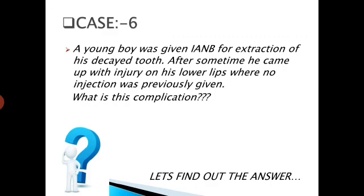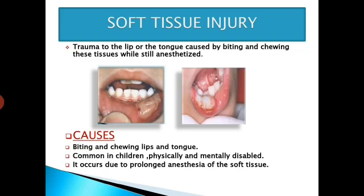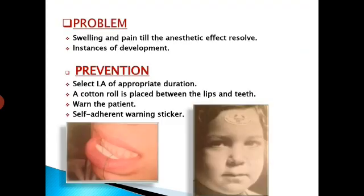Case No. 6. A young boy was given an inferior alveolar nerve block for extraction of a decayed tooth. After some time he presented with injury on his lower lip where no injection was previously given. What is this complication? The answer is soft tissue injury — trauma to the lip or tongue caused by biting and chewing these tissues while still anesthetized. It is common in children, especially in physically and mentally disabled patients, and occurs due to prolonged anesthesia of the soft tissue. Problems include swelling and pain until the anesthetic effect resolves, and risk of infection.